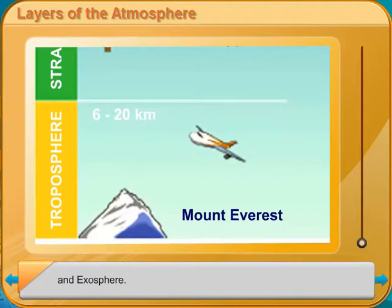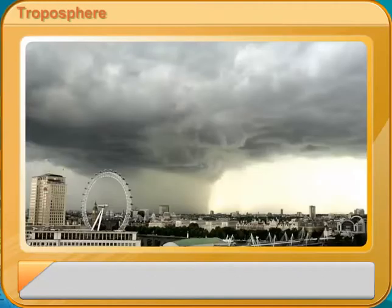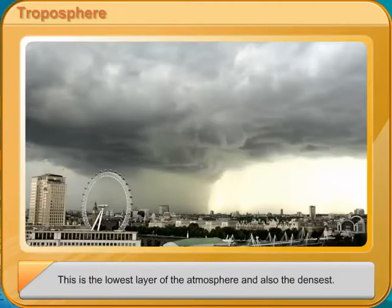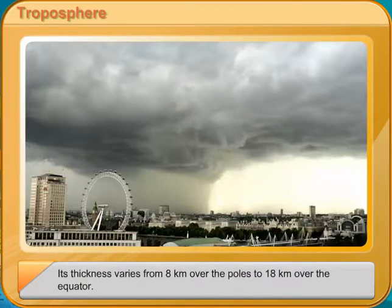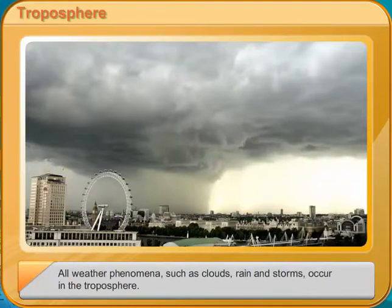The troposphere is the lowest layer of the atmosphere and also the densest. Its thickness varies from 8 km over the poles to 18 km over the equator. All weather phenomena such as clouds, rain and storms occur in the troposphere. The boundary between the troposphere and the stratosphere is the tropopause.